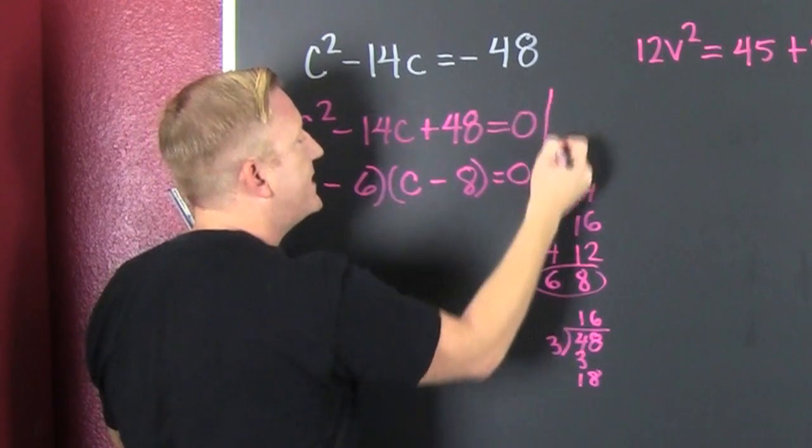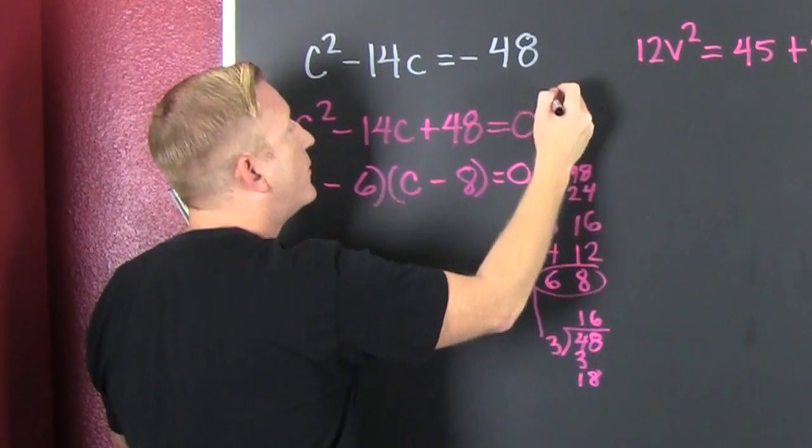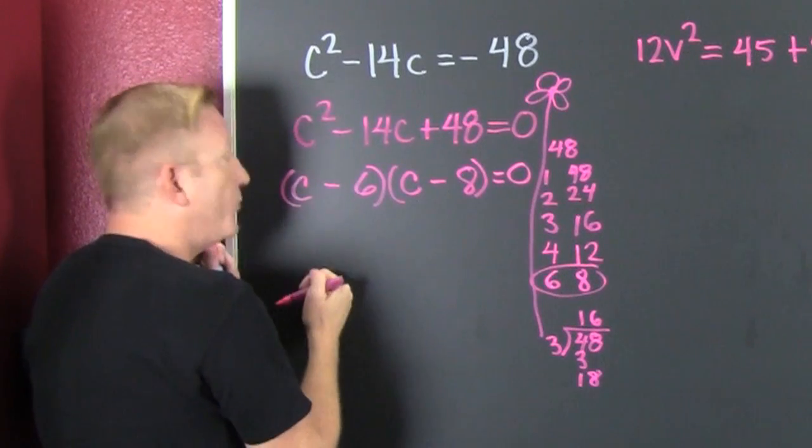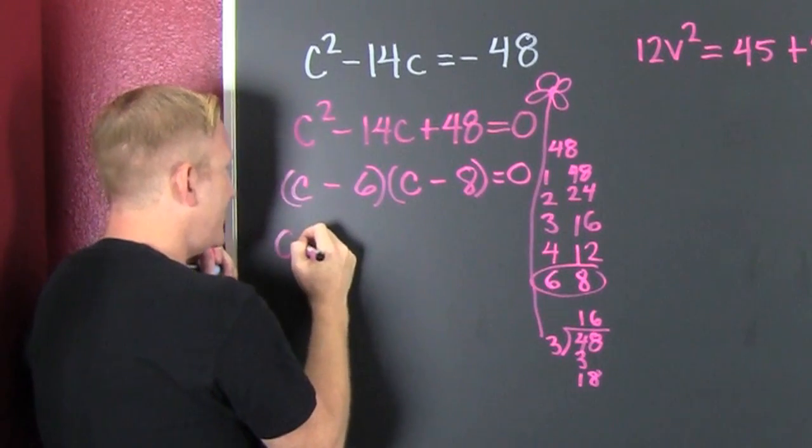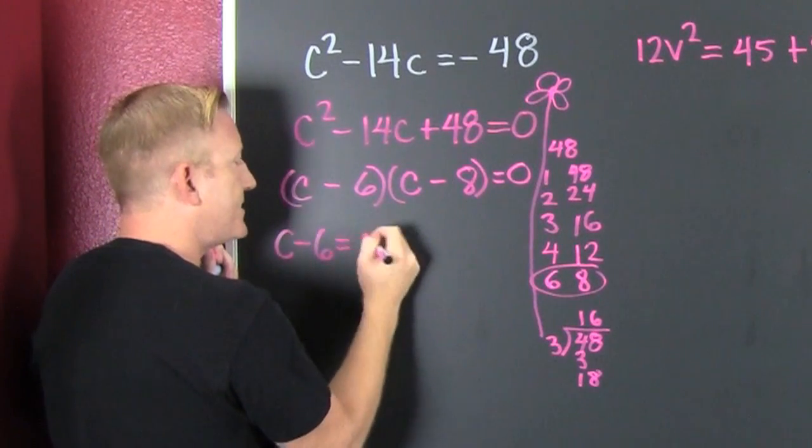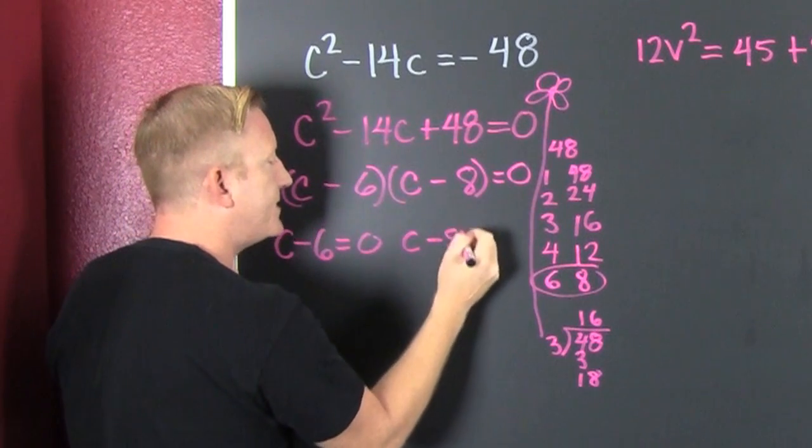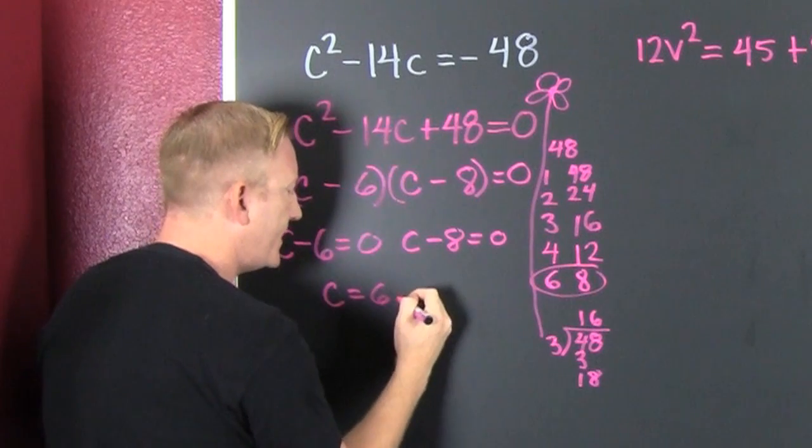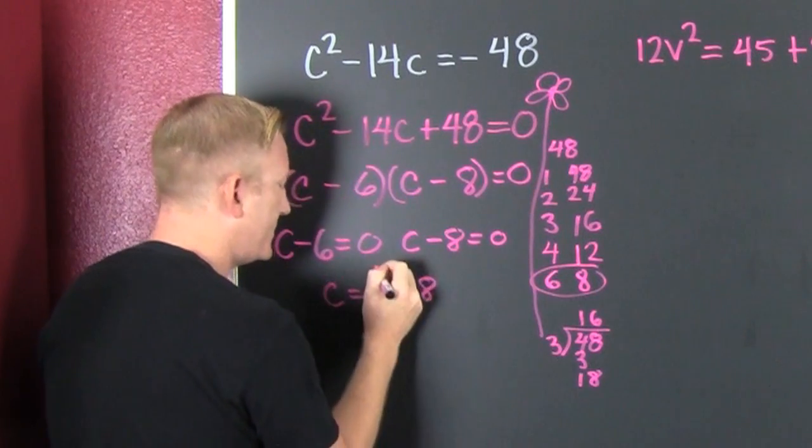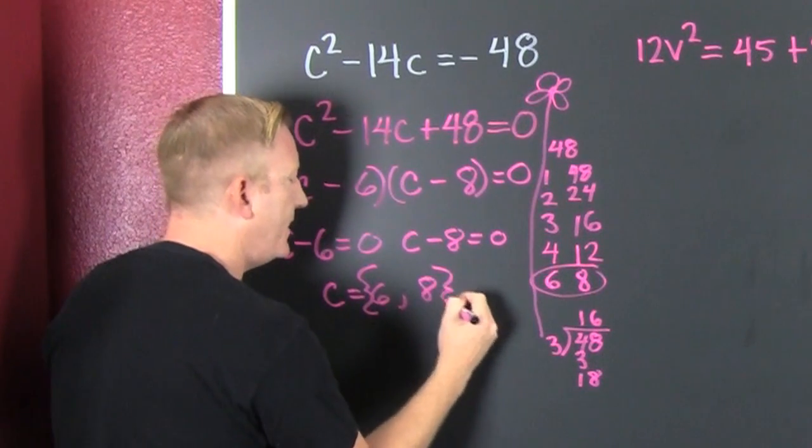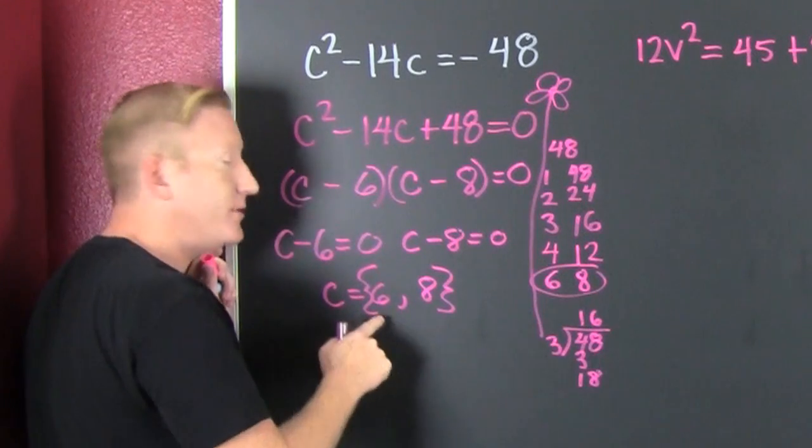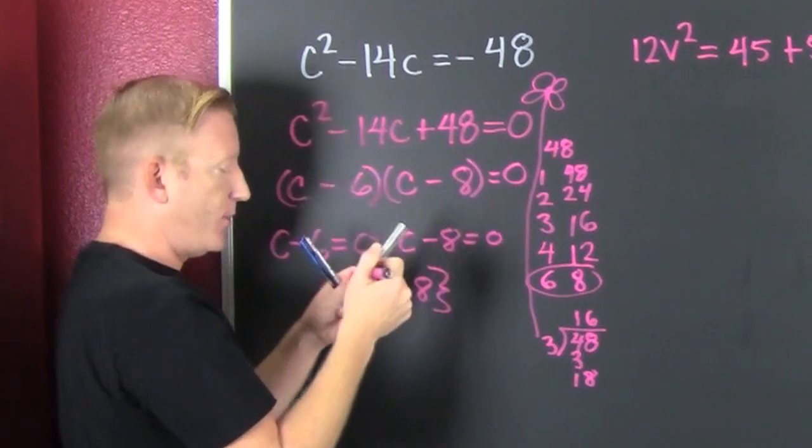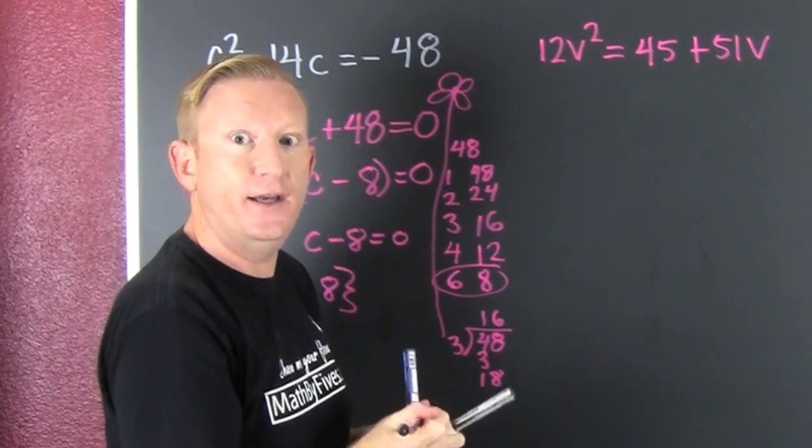The signs are the same and they're both negative, that's a minus 6 and a minus 8. Now we use the zero factor property and we see c minus 6 is 0 or c minus 8 is 0. Then c is 6 or 8. But if you don't believe me, you just found the only two numbers in the entire world that satisfy that equation.